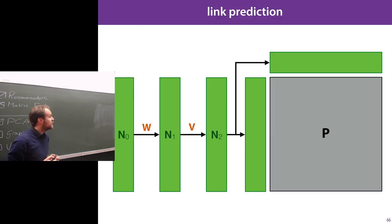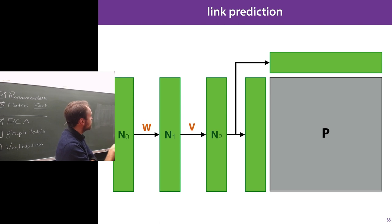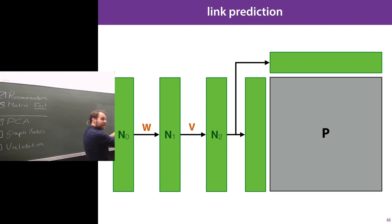You can also do link prediction: you start with node embeddings, apply two graph convolutions to get refined node embeddings, then put the node embeddings on both sides of your prediction matrix — essentially multiplying the node embeddings by the transposed node embeddings — and the result is your prediction. You compare that to your target links that you know exist and backpropagate the error.